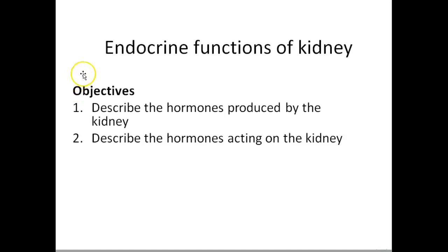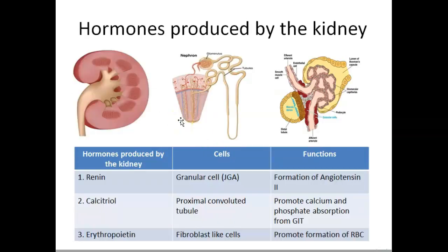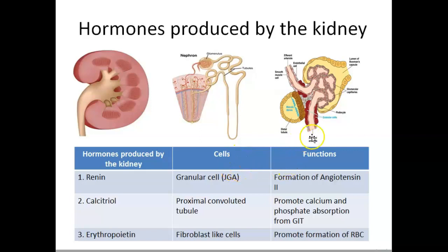Hi everyone, in this lesson we are going to learn about the endocrine functions of the kidney. First we are going to describe what are the hormones produced by the kidney, then we are going to describe what are the hormones acting on the kidney. We shall start with the hormones produced by the kidney, and this table shows the hormones produced by the kidney, what type of cells produce them, from where they are produced, and what are the major functions of these hormones.